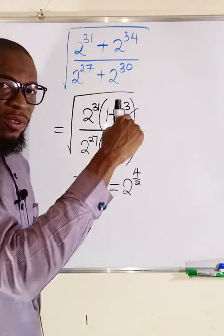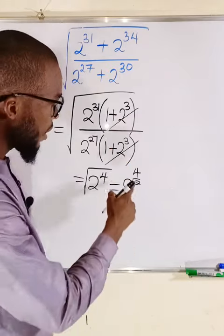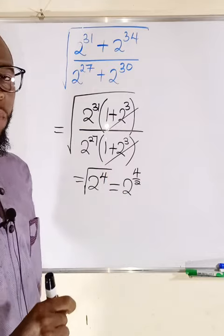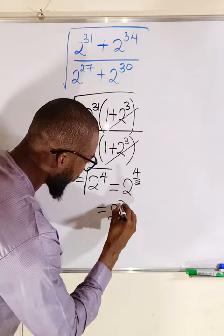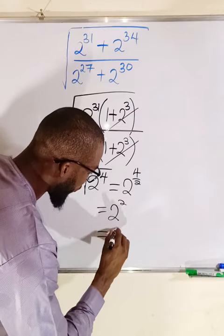Because the square root is a power of 1 over 2. And 4 divided by 2 is equal to 2. So this gives us 2 to the power of 2, which can be simplified to 4.